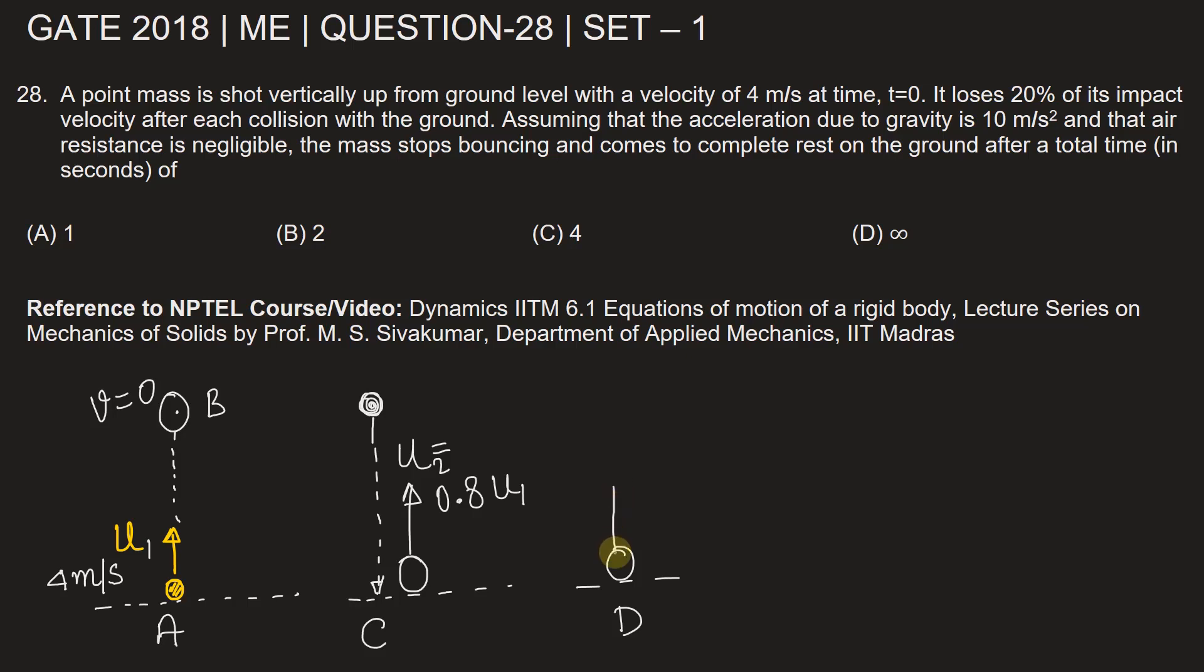Again, it will go up with the velocity, let's say u3. And this will be equal to 0.8 times u2. From this pattern, we can see that always the velocity after each collision...